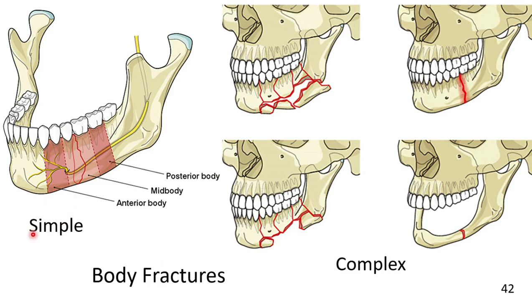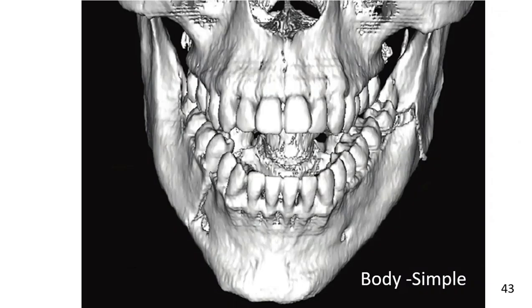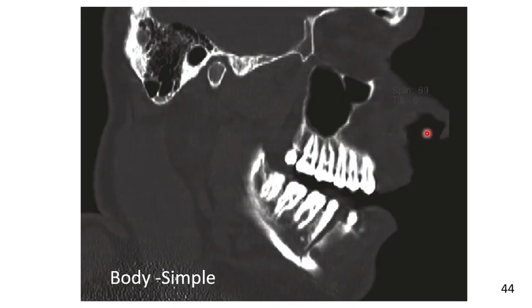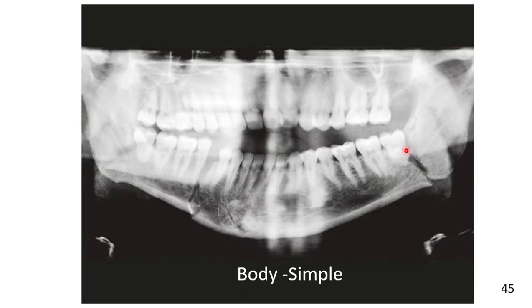Body fractures can be simple or complex. This 3D reconstruction shows a simple right anterior body fracture with an associated left mandibular angle fracture. A sagittal CT scan of the same patient shows this fracture, and an orthopantomogram shows the same patient with bilateral fracture — the body fracture and the angle fracture.